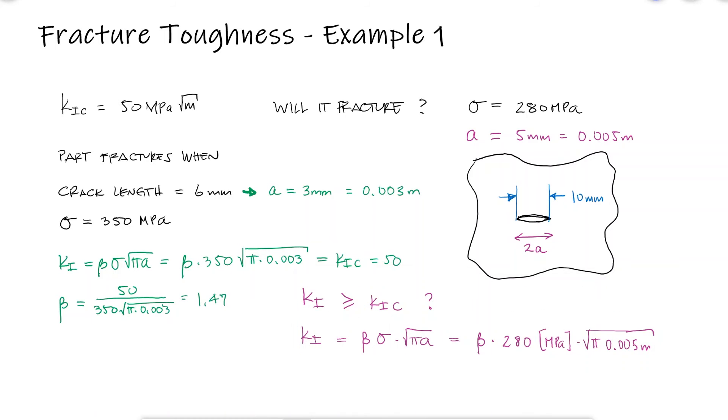Solving for the modification factor, we obtain the value that we were missing for our current crack length and stress. Since the value of Ki exceeds the fracture toughness of the material, we conclude that the component will in fact fracture.